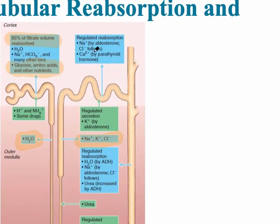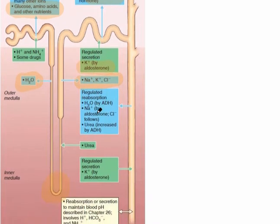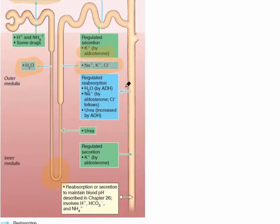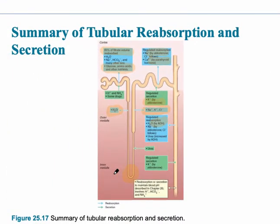In the distal convoluted tubule, reabsorption is controlled primarily by hormones — aldosterone and parathyroid hormone — and it's regulated depending on the needs of the body and blood pressure. The final modification is in the collecting duct, primarily by ADH. One of the final functions of the urinary system is the regulation of pH balance in the blood, which will be covered in future lectures on fluids, electrolytes, and acid-base balance.